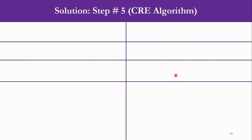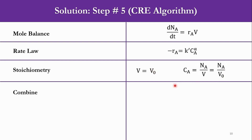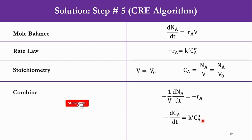Step 5 — the CRE algorithm: mole balance for batch reactor is dNA/dt = rA·V. Rate law: −rA = k'·Ca^α. In stoichiometry, it is a constant volume system, so V = V0 and Ca = NA/V0. Combining all these: −(1/V)·dNA/dt = −rA, which becomes −dCa/dt = k'·Ca^α.